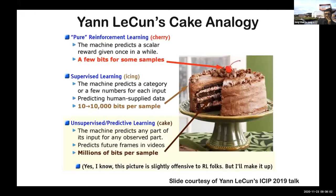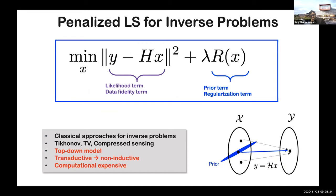This picture is taken from Professor Yann LeCun's presentation material. One of the godfathers of artificial intelligence compares AI problems to a cake: reinforcement learning is the cherry on top, supervised learning is just the icing, and the body of the cake is the unsupervised learning problem. Therefore, unsupervised learning is the most important current topic of artificial intelligence. One classical approach for unsupervised learning for inverse problems is penalized least squares, which minimizes a cost function composed of two terms: a data fidelity or likelihood term, and a prior or regularization term. Classical approaches like total variation and compressed sensing belong to this class, where the prior is usually designed in a top-down manner based on mathematical principles.